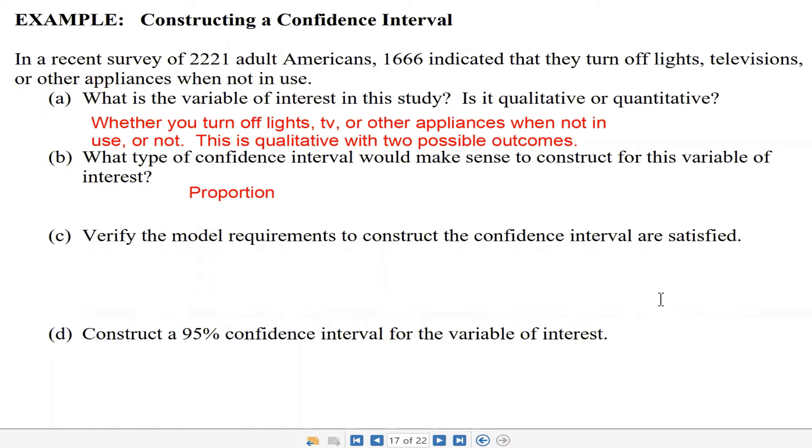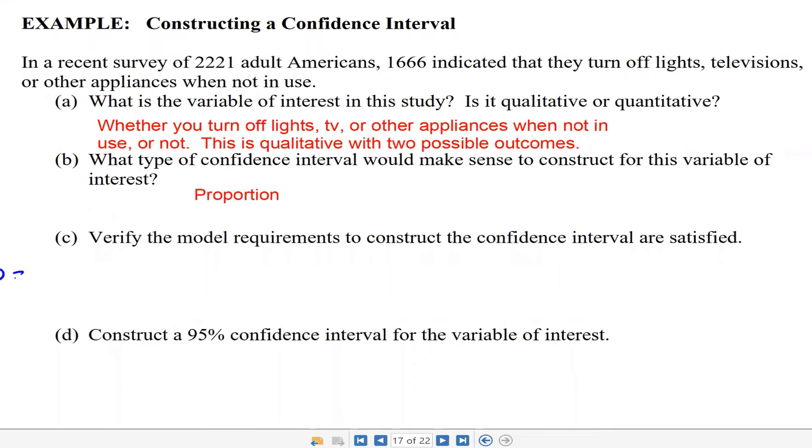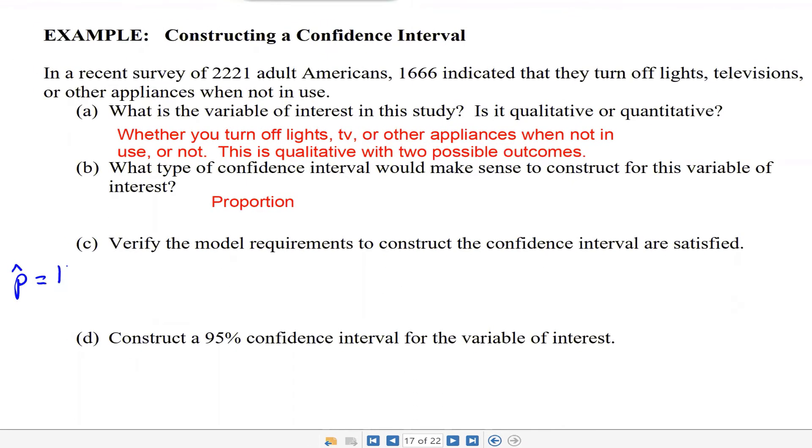Because it's qualitative with two possible outcomes, it makes sense to construct a confidence interval for a proportion. So first, I need to compute p hat, my sample proportion, which is 1,666 divided by 2,221, and I'm getting 0.750.